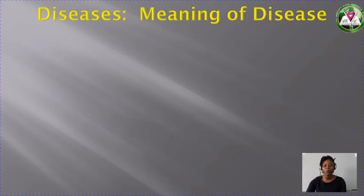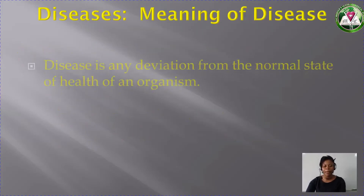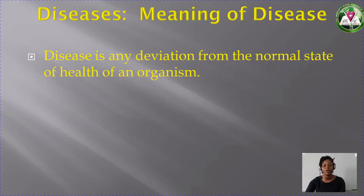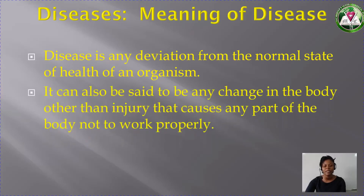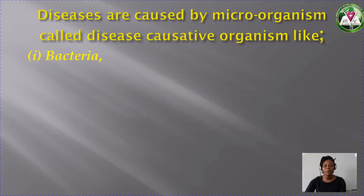Number one, what is disease? Disease is any deviation from the normal state of health of an organism. We can also say that disease is any change in the body other than injury that causes any part of the body not to work properly. There are some organisms that are microscopic in nature. We call them microorganisms that cause these diseases and they are called disease-causative organisms.